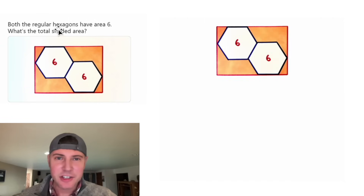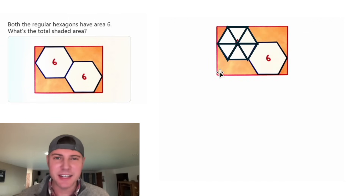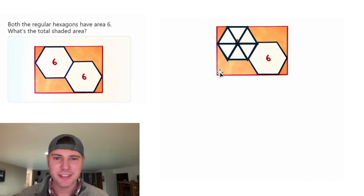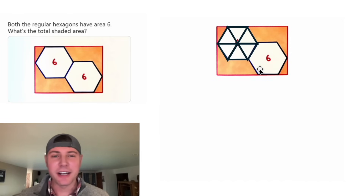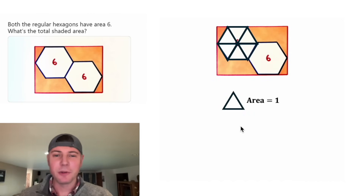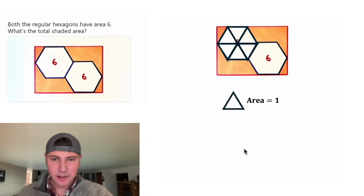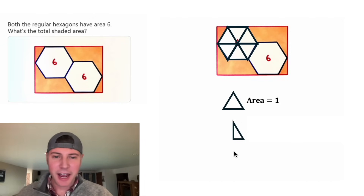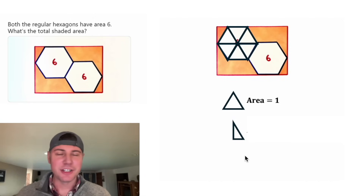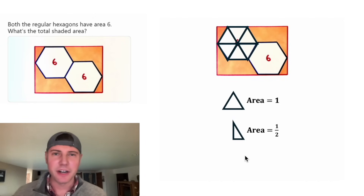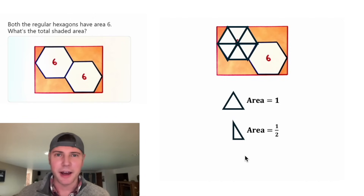It says here it's a regular hexagon. That means it can be split up into 6 equilateral triangles. And since the area of the entire hexagon is 6, each equilateral triangle will have an area of 1. And if we cut the triangle in half to give us a 30-60-90 triangle, each of these will have an area of 1/2.